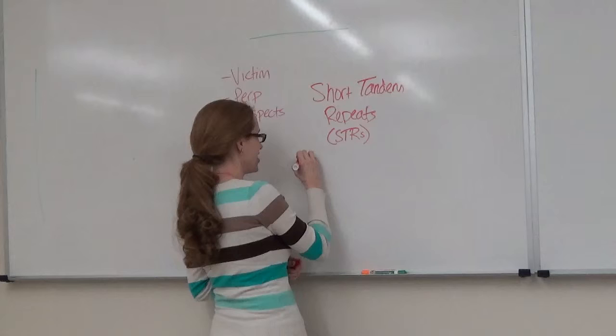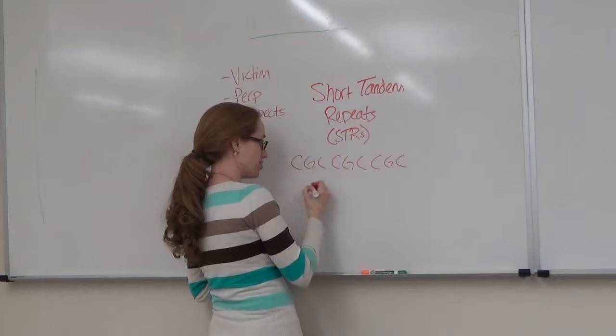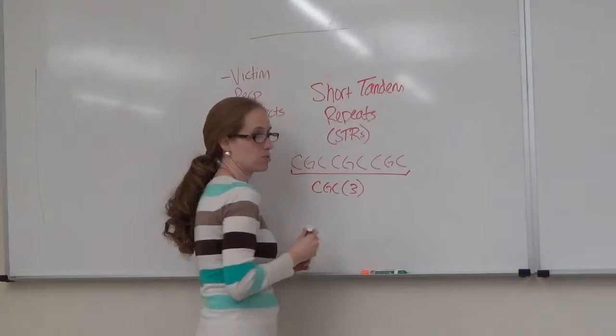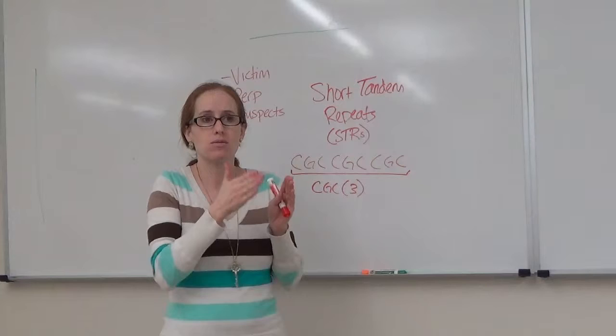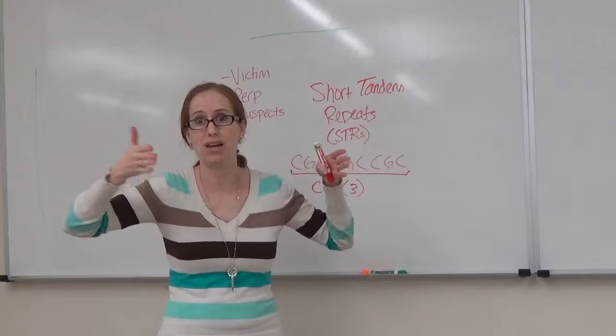Okay, so short tandem repeats are short sequences in these intergenic sequences that are short sequences. They are in tandem, and they repeat. So you might have CGC, CGC, CGC, etc. And so you would call this sequence right here would be a CGC3. It's been repeated three times. And so these sequences, because they're repetitive like this, when the machinery comes in to copy DNA during the S phase, like we're going to do mitosis, sometimes it gets caught up on these repeated sequences.